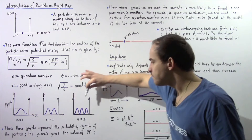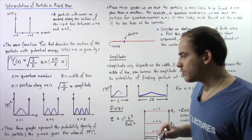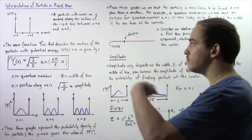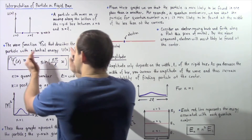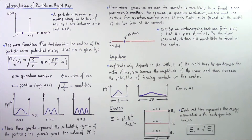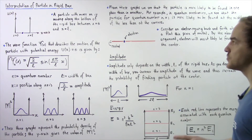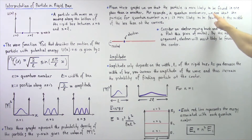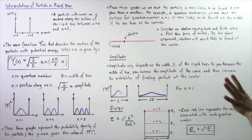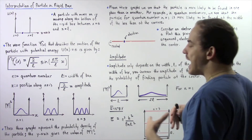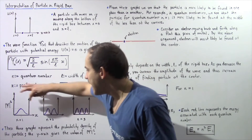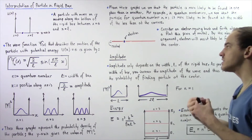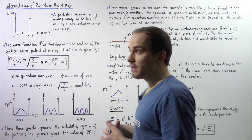For n equals three we get three humps. These three graphs represent the probability density of our particle as it moves along the rigid box, where the y-axis gives the square of the absolute value of the wave function. From these graphs, we see that the particle is more likely to be found in one place than another. For n equals one, the particle is more likely to be found at the center of the one-dimensional rigid box than at the corners, where there is zero probability of finding the particle.